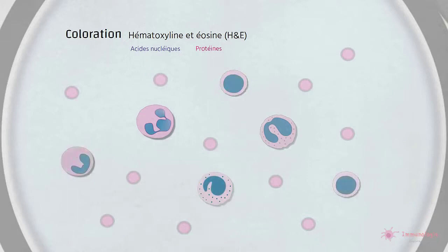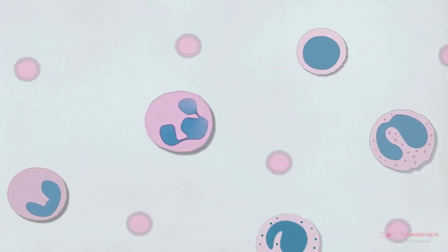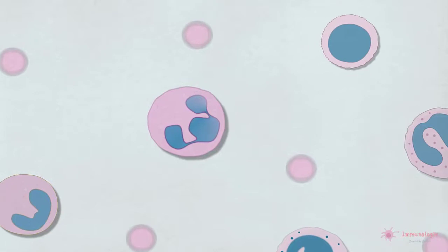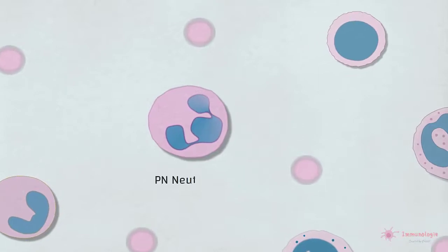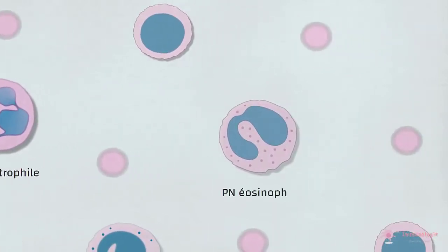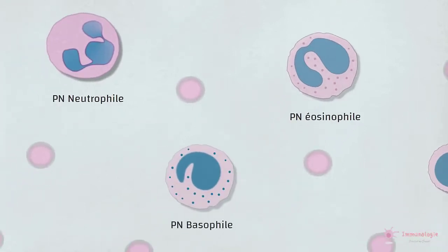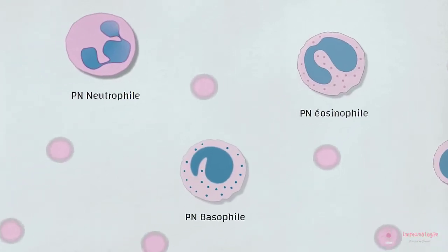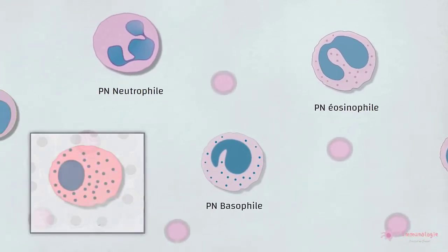Les granulocytes sont des leucocytes ou globules blancs. Ils se répartissent en quatre catégories principales en fonction de leur aptitude à fixer tel ou tel colorant : les neutrophiles, les éosinophiles, les basophiles et les mastocytes.